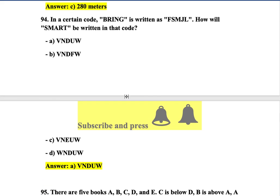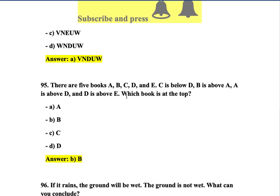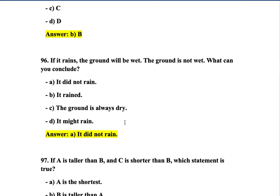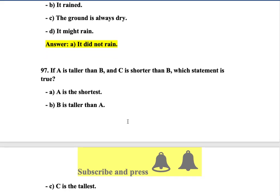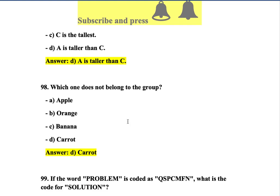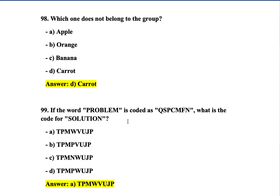Question 94: In a certain code, 'bring' is written as — option A is correct. Question 95: There are five books A, B, C, D, E — C is below D, B is above A, A is above D, and D is above E — which book is on top? Option B is correct. Question 96: If it rains, the ground will be wet; the ground is not wet — what can you conclude? It didn't rain — option A. Question 97: If A is taller than B and C is shorter than B, which statement is true? Option D is correct. Question 98: Which one does not belong to the group — carrot is a vegetable while the other three options are fruits.